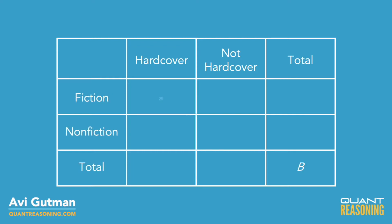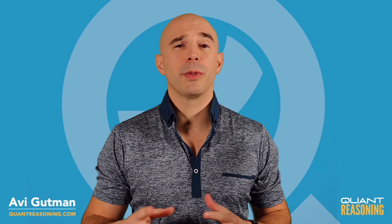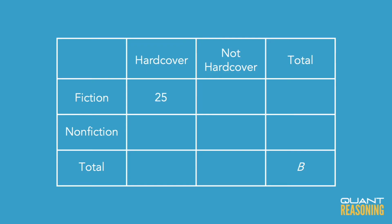We know that the total number of books is B, and in fact that's what the question is asking us to find out: what is the value of B? We're also told that there are 25 hardcover fiction books, so 25 goes into the 'both' cell in our diagram.